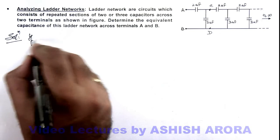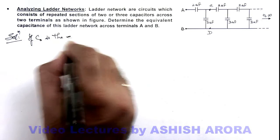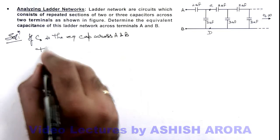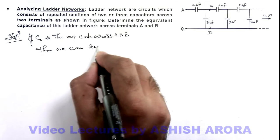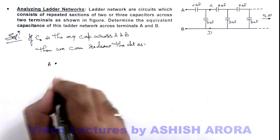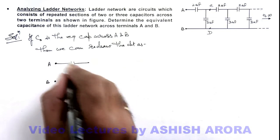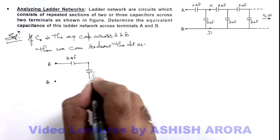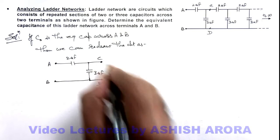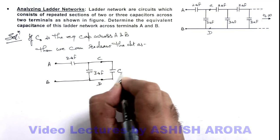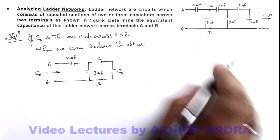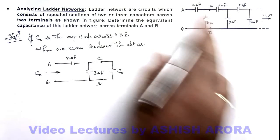We can write: if C₀ is the equivalent capacitance across terminals A and B, then we can redraw the circuit as follows. Terminal A and terminal B are shown, with a 2 microfarad capacitor and a 3 microfarad capacitor. Across terminals C and D, we replace the whole remaining network by the equivalent capacitance C₀. This C₀ represents the infinite group of capacitors containing 2 and 3 microfarad capacitances.